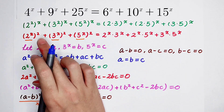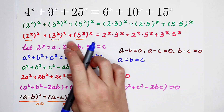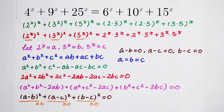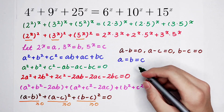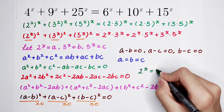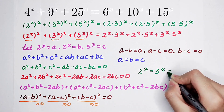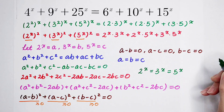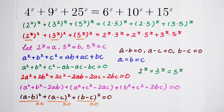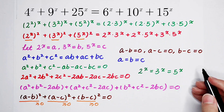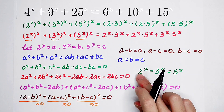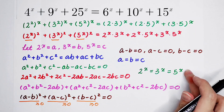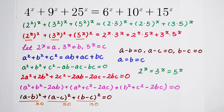Since A is 2^x, B is 3^x, and C is 5^x, we get 2^x = 3^x = 5^x. Because these three different bases have the same value, x can only be 0. So the value of x is 0.